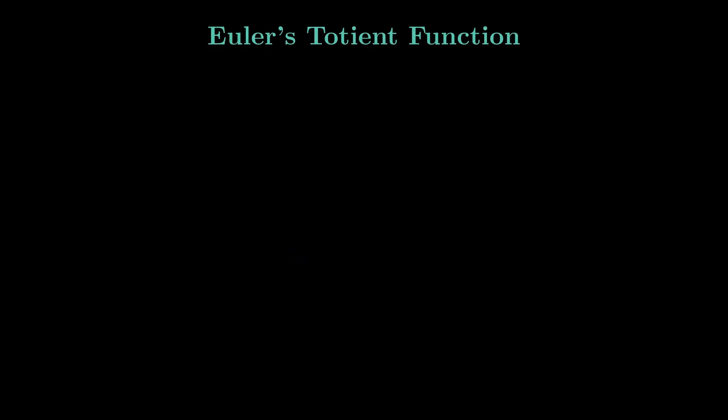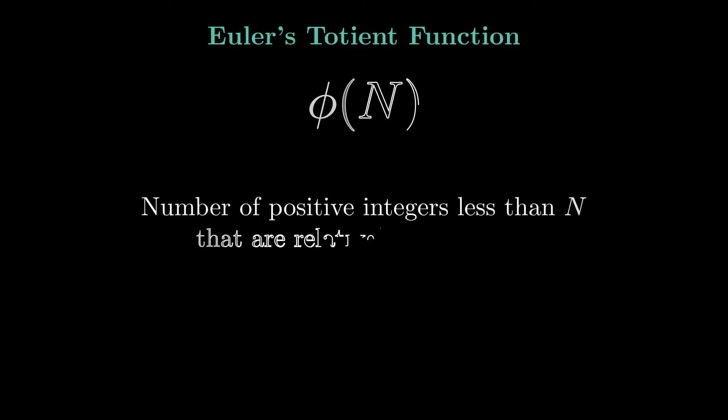The Euler's totient function φ is defined as the number of integers less than n that are coprime with n. In other words, it is the number of integers m such that the greatest common divisor (GCD) of n and m is 1.